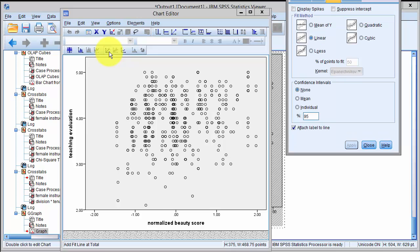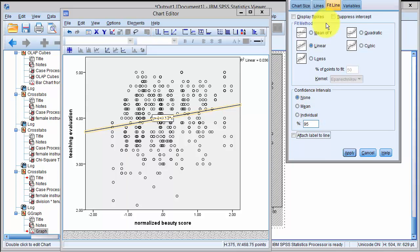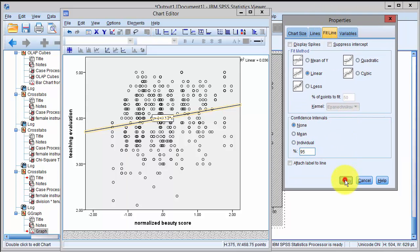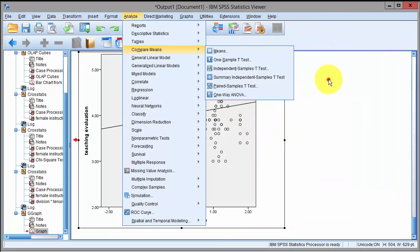It says, do you want to fit a linear regression line? I'm not going to attach the label so I deselect this. You can see this is the dialog box and I say apply and say close here and there's the regression line.